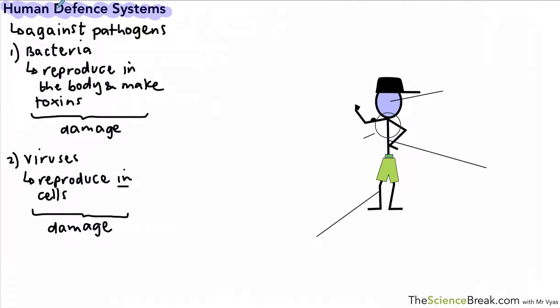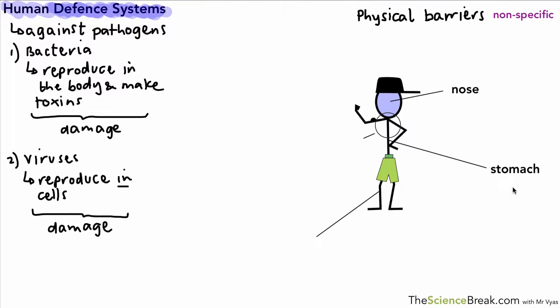In both cases we get damage to cells and tissues, and that's what makes us ill when we get an infectious disease. Let's look at the non-specific methods first. We have four to look at: the nose, stomach, skin, and what we call the trachea and bronchi — which is to do with your windpipe and your lungs.